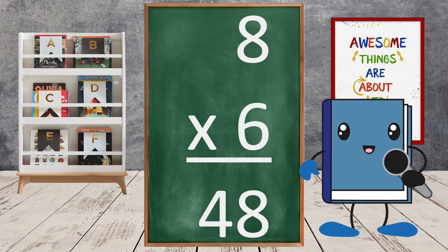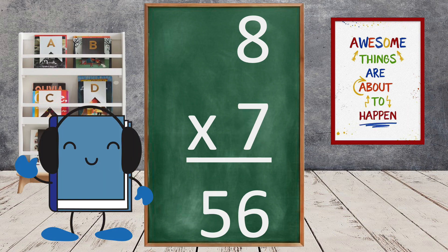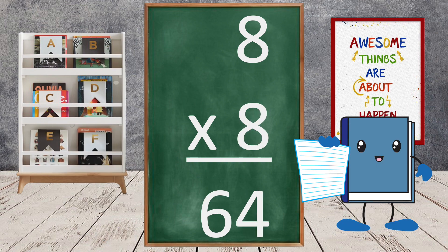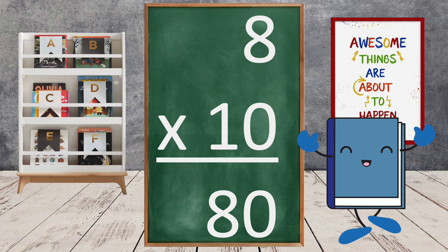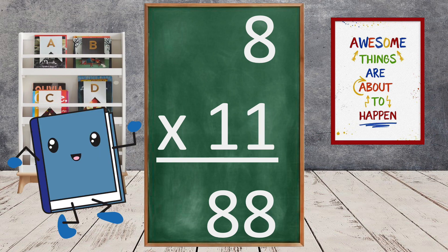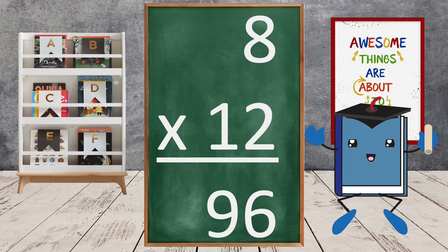8 times 6 equals 48. 8 times 7 equals 56. 8 times 8 equals 64. 8 times 9 equals 72. 8 times 10 equals 80. 8 times 11 equals 88. 8 times 12 equals 96.